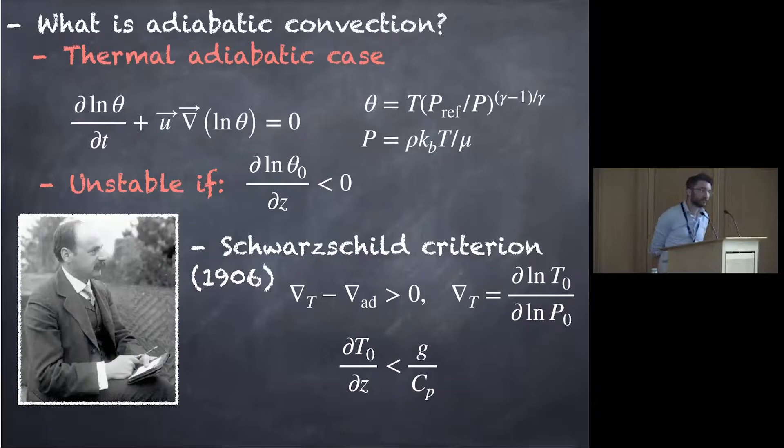And Jeremy also explains that just before, if you do a linear stability analysis of the thing, you end up with the Schwarzschild criterion, comparing your temperature gradient to the adiabatic gradient, and you're unstable to that criterion.